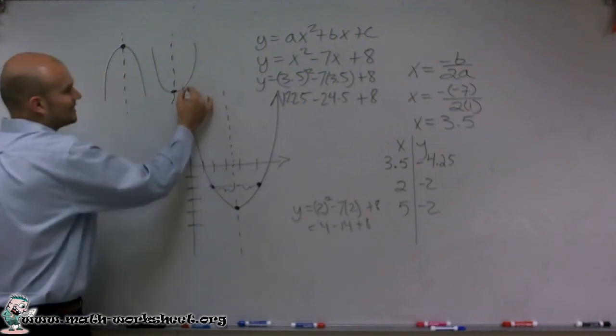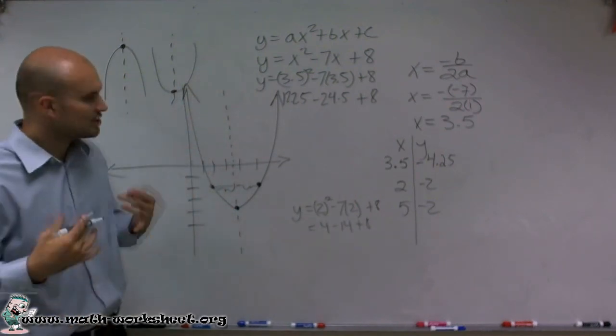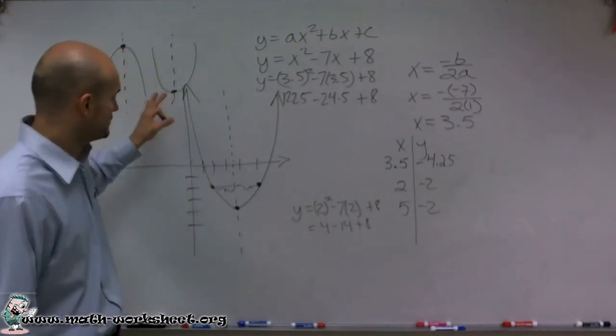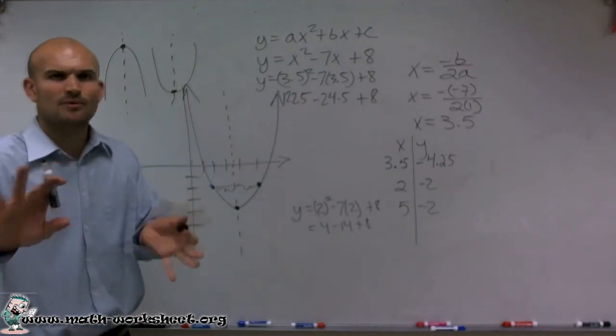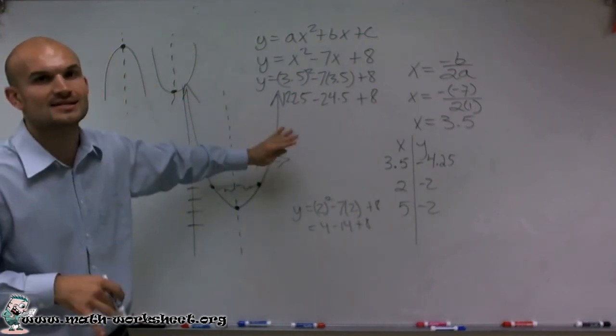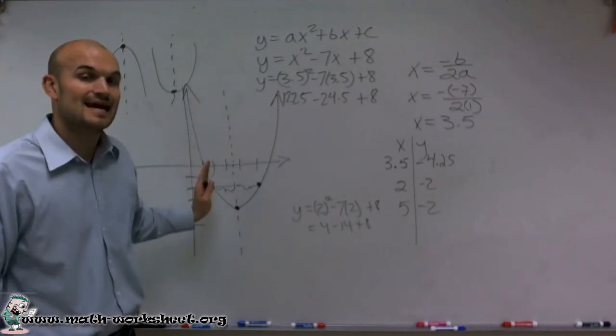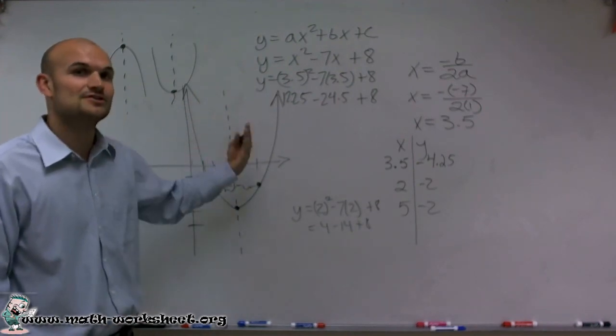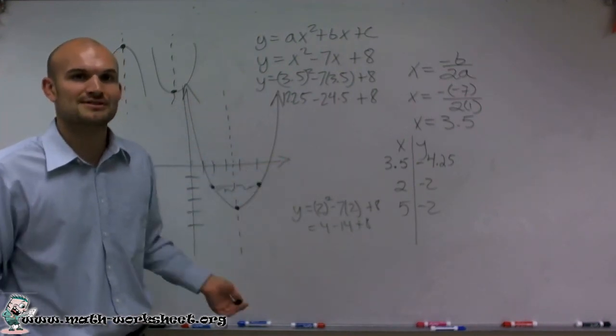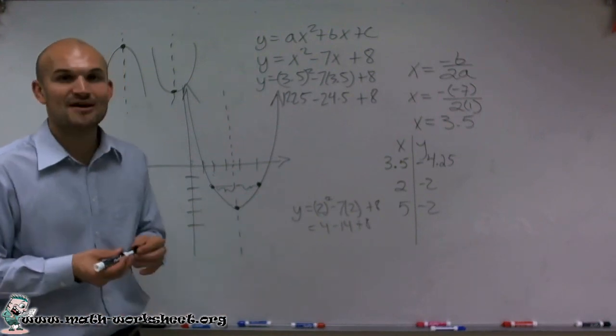There's a couple other ways that we can determine how to graph our function. You can also look at the x and y intercepts. But we'll just focus right now on determining the vertex and then choosing table of values that are to the left and to the right of your line of symmetry. That's how you graph a problem. Thanks.